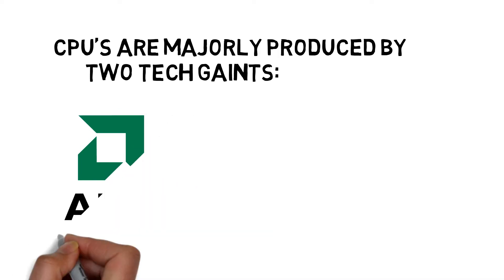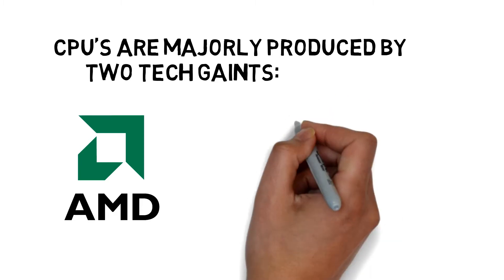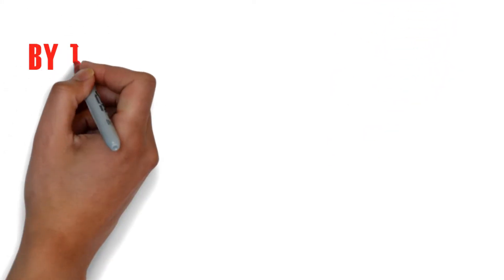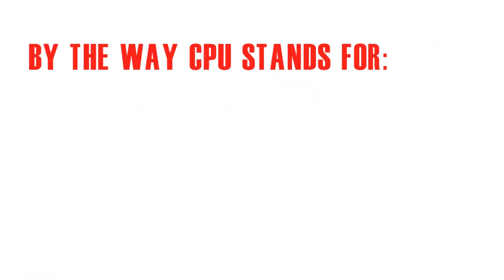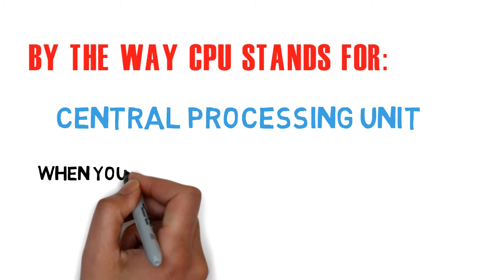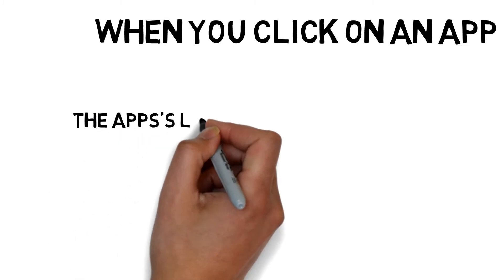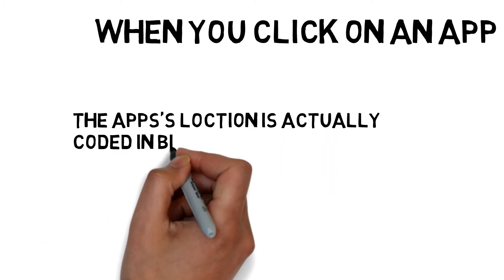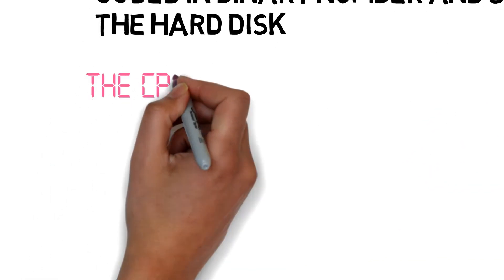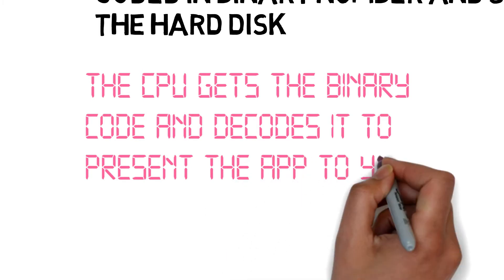CPUs are majorly produced by two tech companies — the first one is AMD and the other one is Intel. By the way, CPU stands for Central Processing Unit. When you click on an app, the processor calculates the app's location, which is coded in binary and saved in the hard disk. The CPU gets the binary code and decodes it to present the app to you.